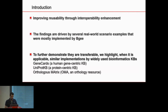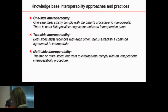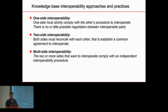In this study we identified three different types of interoperability approaches. The first, one-sided interoperability, is where one side must strictly comply with the other's procedures — there is no negotiation. The second gives more flexibility but can take longer due to a reconciliation aspect, where both sides must reach a common agreement. Finally, multi-sided interoperability is where two or more sides comply with an independent interoperability standard, such as a data interoperability standard.